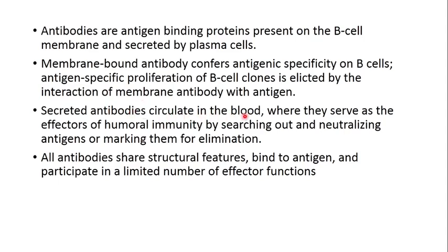As a result of the interaction between the B cell and the antigen, B cell clones are produced, and these clones produce antibodies which circulate in the blood. The main function of antibody is that it serves as an effector of humoral immunity. These antibodies search out the antigen throughout the blood and, upon finding the antigen, neutralize it.